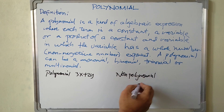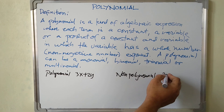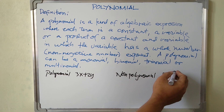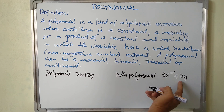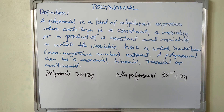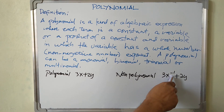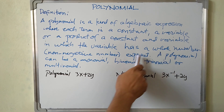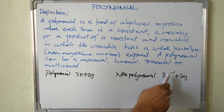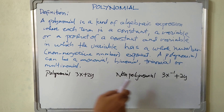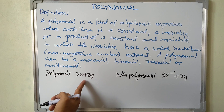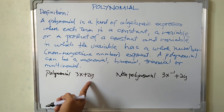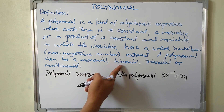For a non-polynomial example, consider 3x raised to negative 1 plus 2y. This expression is not a polynomial because by definition the exponent must be a whole number, but here it is negative. So this is not a polynomial. The previous expression 3x + 2y is a polynomial, and since it has two terms, it is called a binomial.